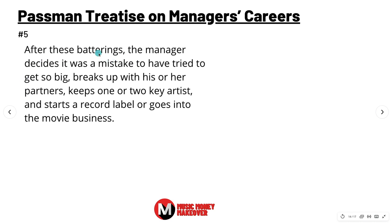Number five: after these batterings, the manager decides it was a big mistake to have tried to get so big, breaks up with his or her partners, keeps one or two key artists, and starts a record label or goes into the movie business. That's pretty much the life of a manager. If they don't make it to number five and keep managing, kudos to that manager.